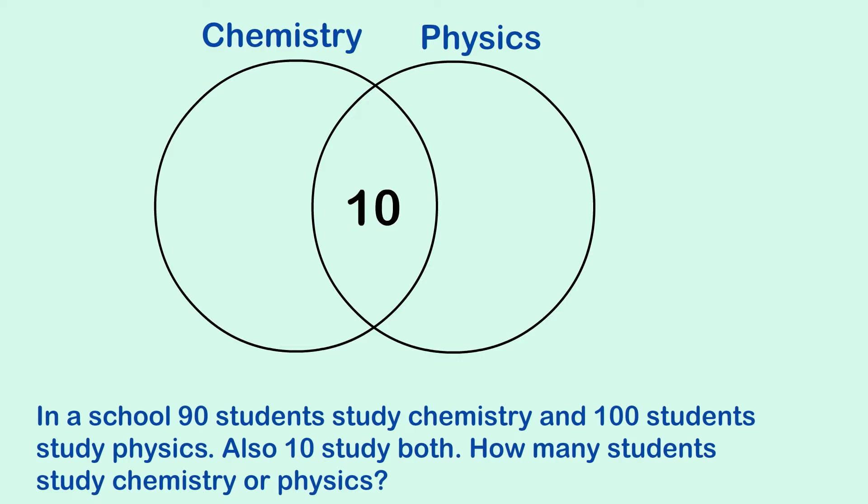So 10 fall in the physics circle and the chemistry circle. And then we work our way out. We know for chemistry there are 90 students in total. We've already put 10 down there, so we need 80 in this section.